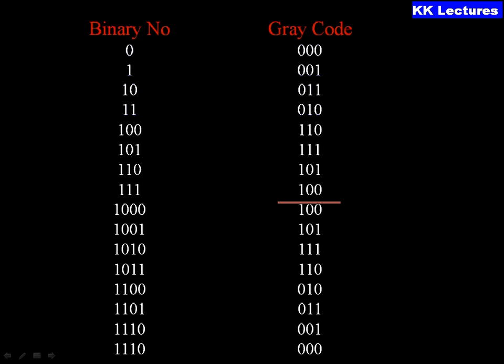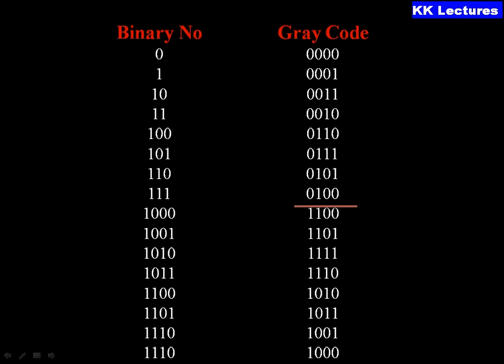Write the three-bit Gray code as it is below the mirror, then add ones below the mirror and zeros above the mirror to construct a four-bit Gray code for binary numbers from zero to fifteen.